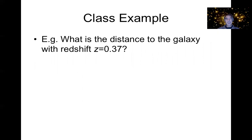So let's keep going with our little example galaxy that we had earlier, which had a redshift of 0.37. So why don't you, in the break, work out what the distance to that galaxy is using Hubble's law.